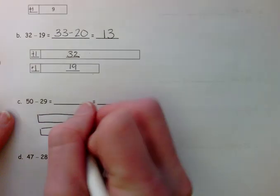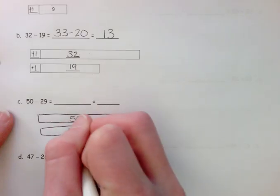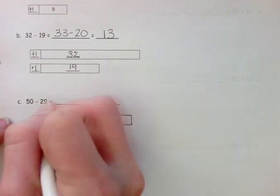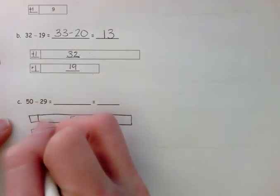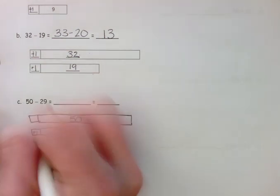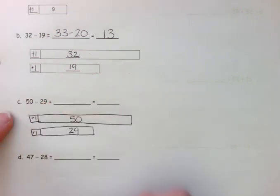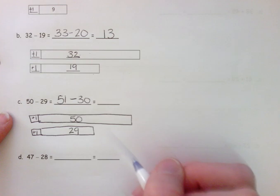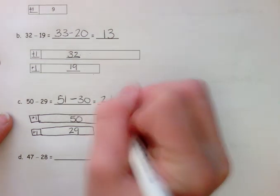So first we have 50 minus 29. But I would really prefer to subtract in groups of 10. So I'm going to add 1 to 29 and 1 to 50 to make this 51 minus 30. And that will make this easier to solve.